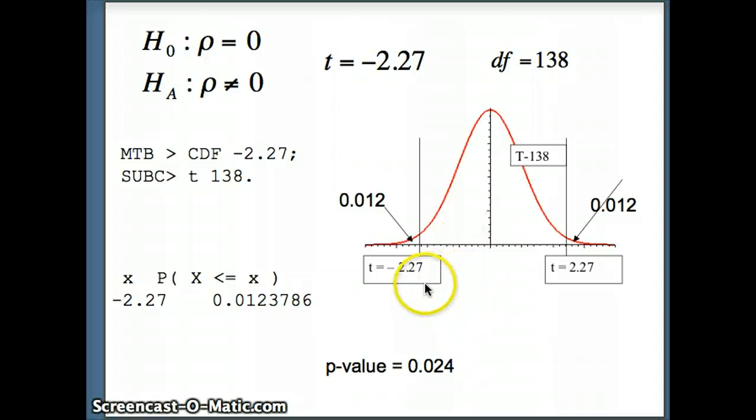Negative 2.27, this is going to be a two-tail test, so I've got to go to the left of negative 2.27 and to the right of positive 2.27. You'll notice I've asked Minitab to do CDF negative 2.27 T, 138. It gives me 0.012 in the left tail and 0.012 in the right tail for a p-value of 0.024.